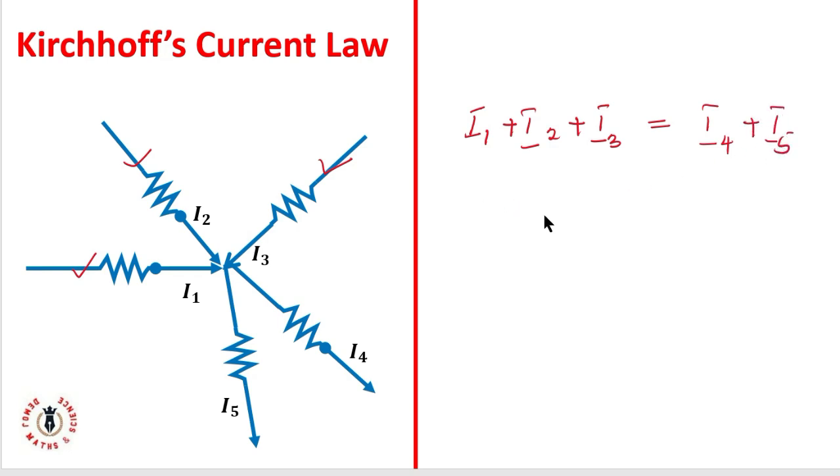Now you can have a node in whichever dimension. Instead of having this, what if I have a node this way? If this is a node, I have current flowing here. This is I1, this is I2, and this is I3.